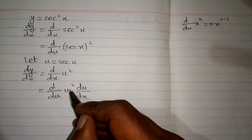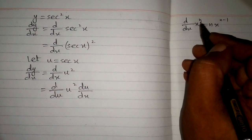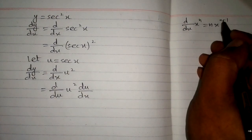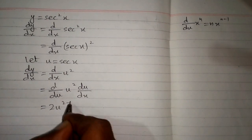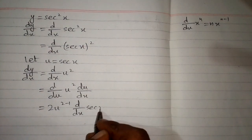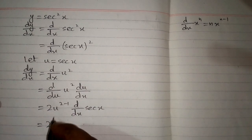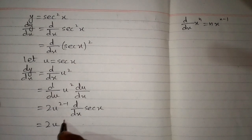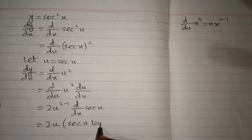The power of u is 2, corresponding to n in the power rule formula. So we put 2 in place of n, giving us the derivative of u² as 2 times u to the power (2−1), multiplied by the derivative of u, where u is sec(x). Since 2−1 = 1, this simplifies to 2 times u multiplied by the derivative of sec(x), which is sec(x)tan(x).